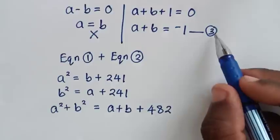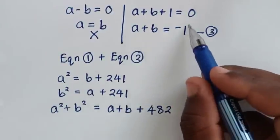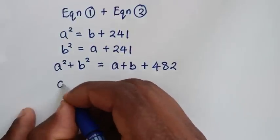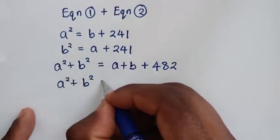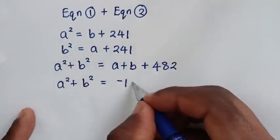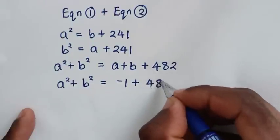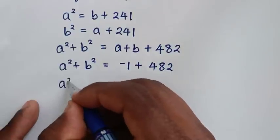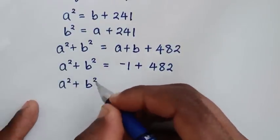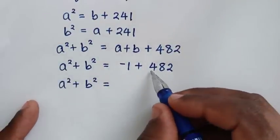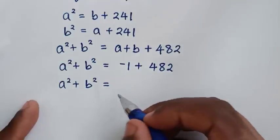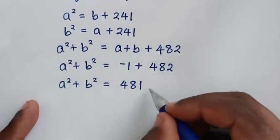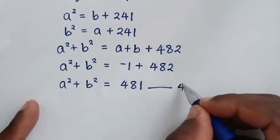Now into this equation, a plus b is from equation 3, which is negative 1. So we substitute negative 1 for a plus b. Our equation becomes: a squared plus b squared equals negative 1 plus 482, which simplifies to a squared plus b squared equals 481. We'll call this equation 4.